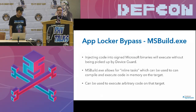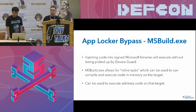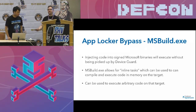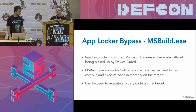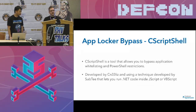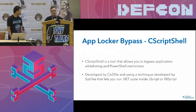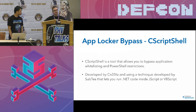The other AppLocker bypass it tries is MSBuild.exe — injecting code into a signed Microsoft binary. If you manage to do that, it will execute code without being picked up by Device Guard. MSBuild.exe specifically allows for inline tasks, which lets you compile and execute code in memory on the target and can be used to execute arbitrary code. The final AppLocker bypass is a script based on a technique developed by Subteam that lets you run .NET code inside JScript or VBScript.